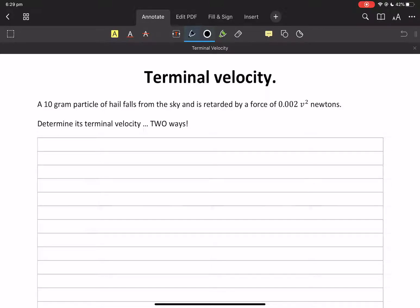Okay, terminal velocity. This is going to be fun. A 10 gram particle of hail falls from the sky. So here's my hail. It's falling directly towards my car.